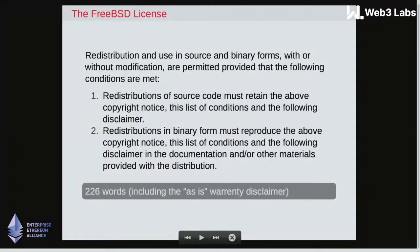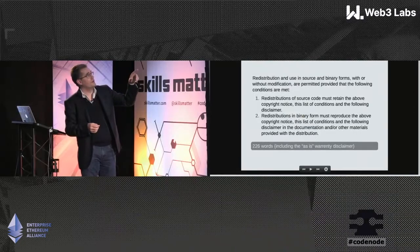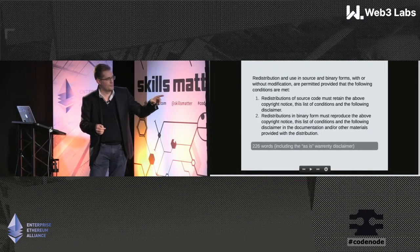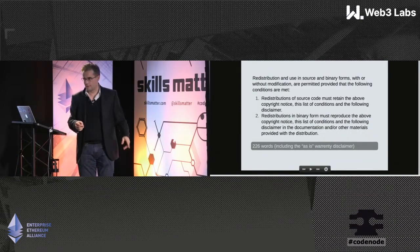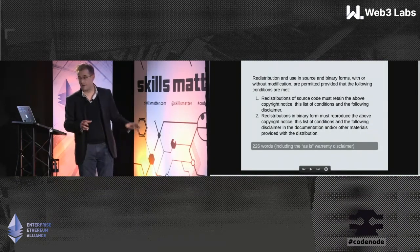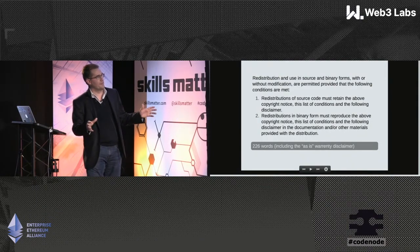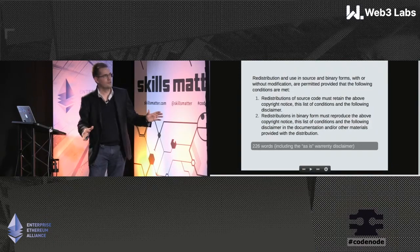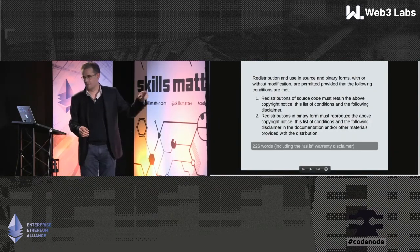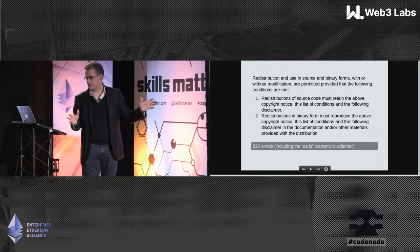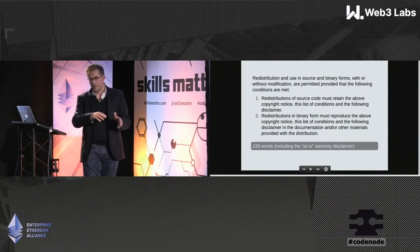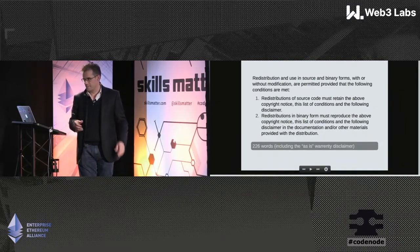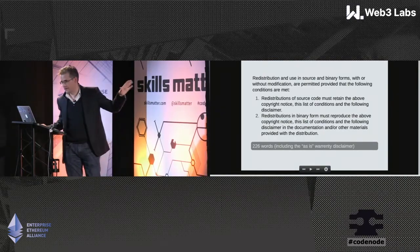Let's look at what distinguishes these two. Here's the FreeBSD license — it's 226 words including the warranty disclaimer. Very short and succinct. It basically says you can do whatever you want with source code; all you have to do is mention that it's covered by this license. You can include it in whatever project you want, put it into a proprietary software project and ship binary only and sell it — it doesn't matter. That's why it's called permissive.